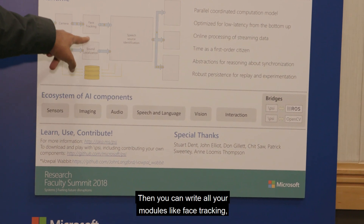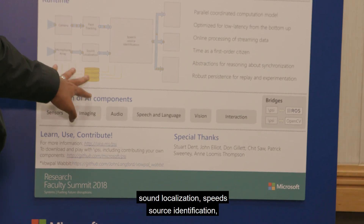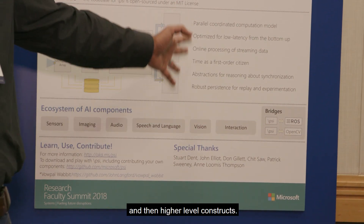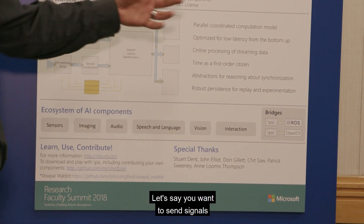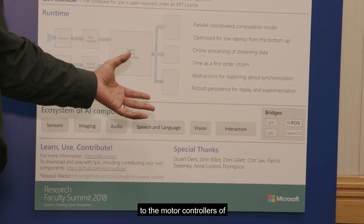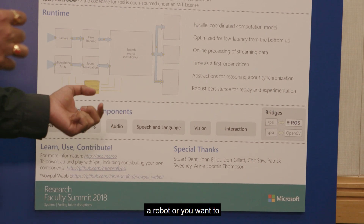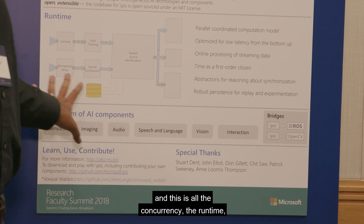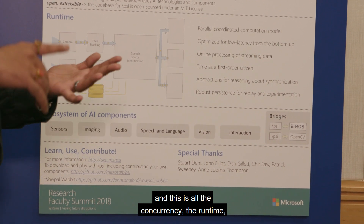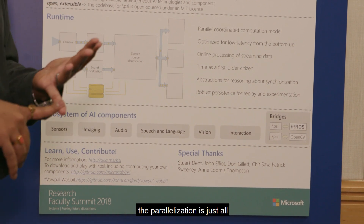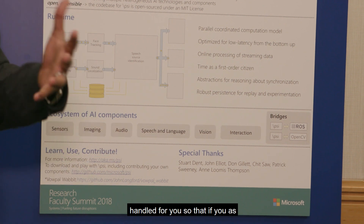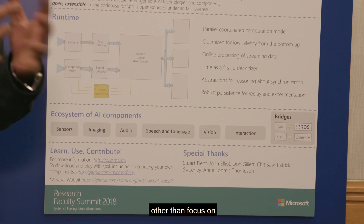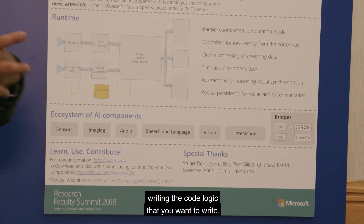You can then write all your modules — like face tracking, sound localization, speech source identification — and then higher-level constructs, like sending signals to the motor controllers of a robot, or talking to humans interacting with the robot. All the concurrency, the runtime, the parallelization is handled for you so that you, as the robotic systems developer, don't have to do anything other than focus on writing the core logic that you want to write.